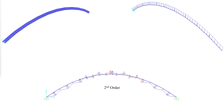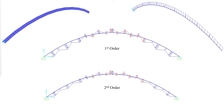In curved members, second-order moments can be calculated either by using a second-order analysis or by amplifying the moments from a first-order analysis. The amplification factors in AISC Specification Appendix 8 for straight members are also accurate for curved members.